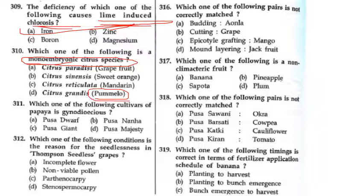Papaya is a Gynoecious plant. Pusa Majesty is a Gynoecious variety. Also remember Nana Dwarf variety.